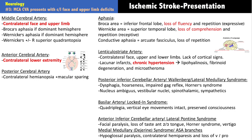For middle cerebral artery infarction, the effects are at the contralateral face and upper limb. A left-sided MCA stroke produces right-sided arm weakness, sensory loss, and facial weakness and sensory loss. For the lower extremities, think anterior cerebral artery. The posterior cerebral artery mostly supplies the occipital lobe, so think vision deficits rather than limb weakness or sensory loss in a particular body region.